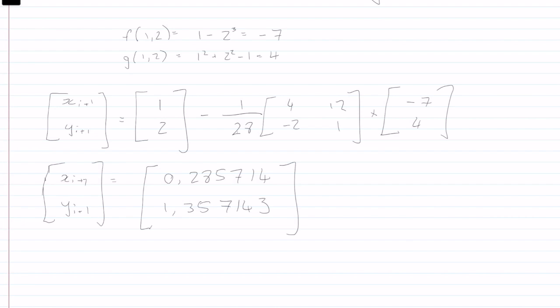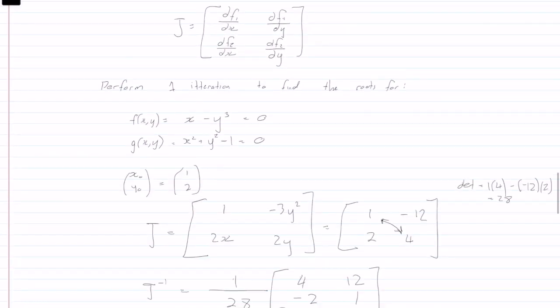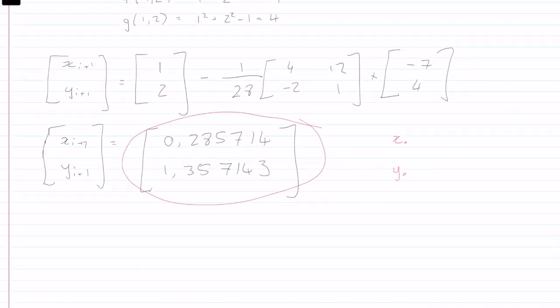If you wanted to do another iteration, now what we do is these values here are our new x_0 and y_0 values, essentially, and we go through the same process.